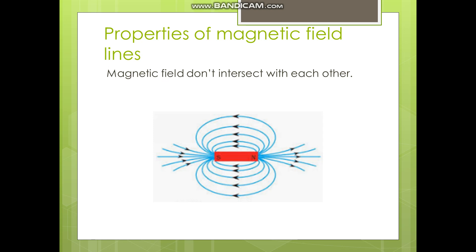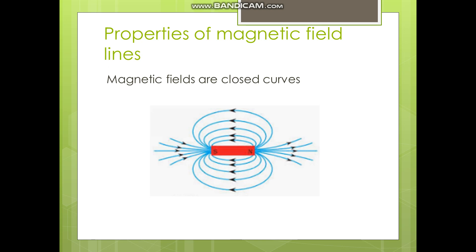Magnetic field lines never intersect — they do not cross over each other. They follow their own path. This means that at different places, the magnetic field has different values. Next, magnetic field lines are always closed curves, so any particle placed between the magnet and the magnetic field lines cannot escape because the magnetic field lines form closed curves.